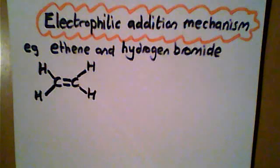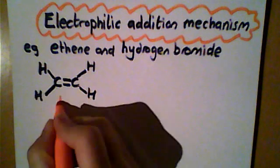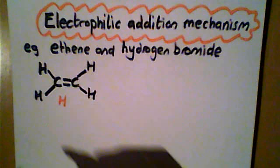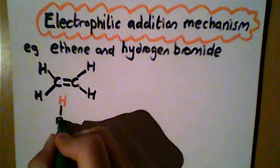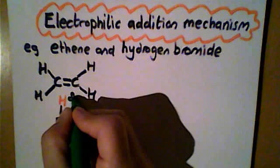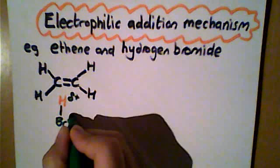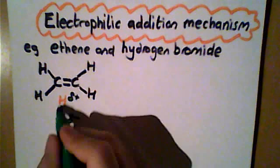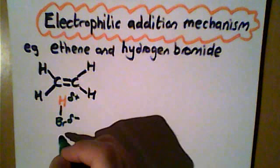Now if we look at a molecule of hydrogen bromide, the hydrogen atom has a slight positive charge because bromine is more electronegative and has a tendency to pull electrons towards itself. So within the covalent bond, bromine is pulling electron density towards itself.